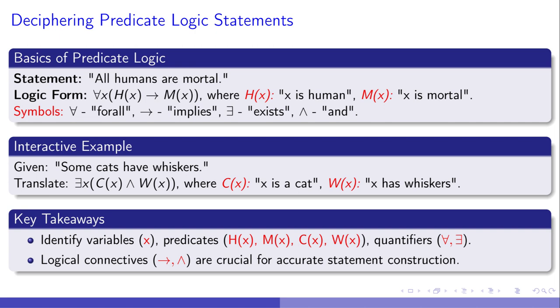Transitioning from the logic-powering technology to the basics of predicate logic, let's examine simple truths. Take, all humans are mortal. Through predicate logic, this becomes ∀X(Human(X) → Mortal(X)), clearly mapping our understanding into logic symbols. Ever thought about how some cats have whiskers translates logically? It's ∃X(Cat(X) ∧ Whiskers(X)). These examples spotlight the importance of variables, predicates, and logical connectors, paving our way to grasp formal proofs with ease.